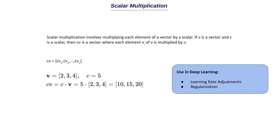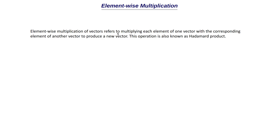The next thing we are going to discuss is element-wise multiplication. The definition for this operation is: element-wise multiplication of vectors refers to multiplying each element of one vector with the corresponding element of another vector to produce a new vector. This operation is also known as the Hadamard product. For example, if we have two vectors — 1, 2, 3 and 4, 5, 6 — we take each element and multiply it with the corresponding element of the other vector.